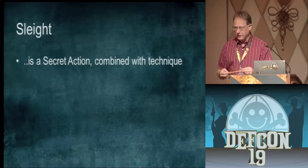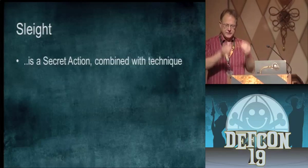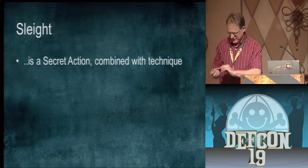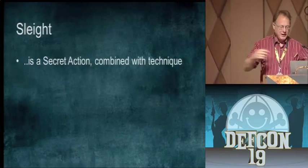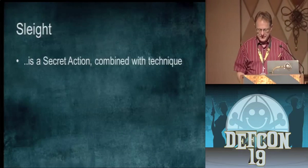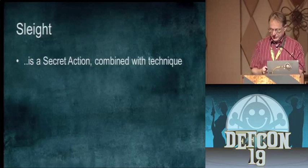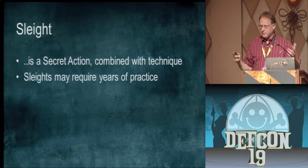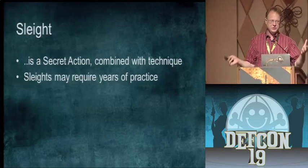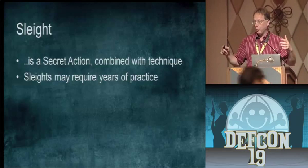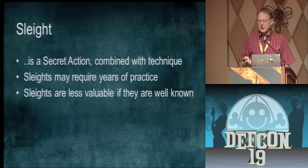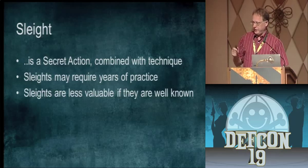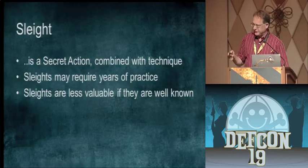The third thing — the most important — is the sleight. You take something like this and it just... there it is over here... there it is again. It's just a secret action with some technique that magicians use. It requires a lot of practice to really be good at this. Some magicians will spend 20 or 30 years just doing one sleight perfectly. Sleights are less valuable the more they're known — if you know what's happening, it's not as effective.